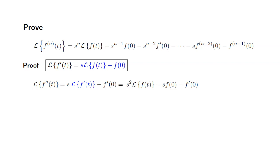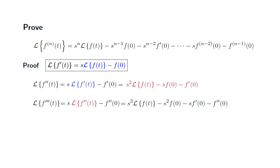Now for the Laplace transform of f triple prime. Since f triple prime is the first derivative of f double prime, we can rewrite it as s times the Laplace transform of f double prime of t — which is the expression right above in purple. Substituting that in, we get s cubed times the Laplace transform of f of t minus s squared times f of 0 minus s times f prime of 0 minus f double prime of 0.